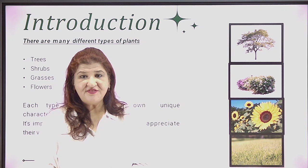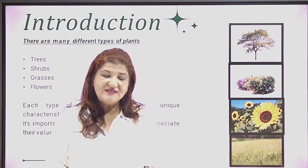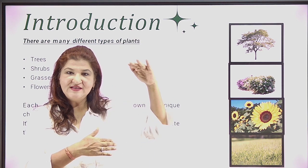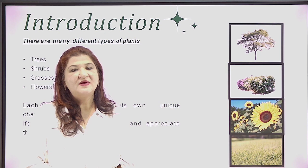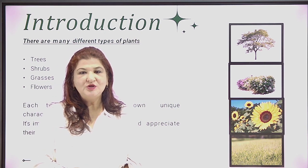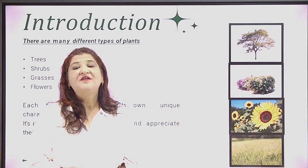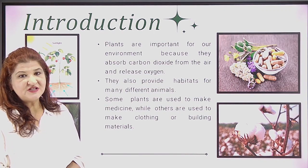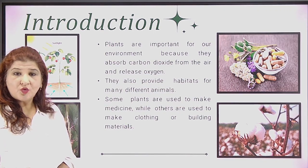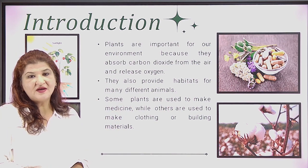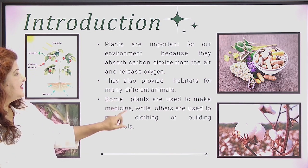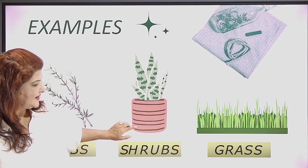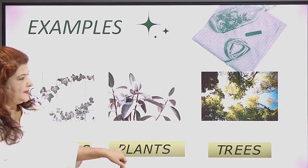Let's classify the plants. There are various categories in which scientists have classified all the plants, depending on the size of the plants. So we divide them into herbs, shrubs, grass, flowering plants, and trees. From certain pictures, we will learn which plants are called what — what is the category of shrubs, how they are termed, and which are the examples. Here you can see herbs, shrubs, grass, climbers, plants, and trees.